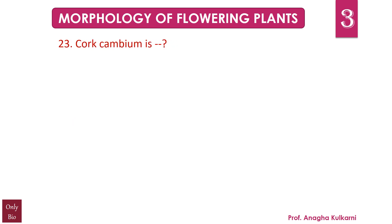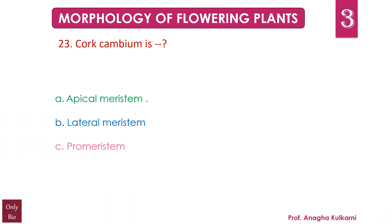Question number 23. Cork cambium is dash. A. Apical meristem. B. Lateral meristem. C. Promeristem. D. Intercalary meristem. The correct answer for this question is B — Lateral meristem. Cork cambium is a lateral meristem.